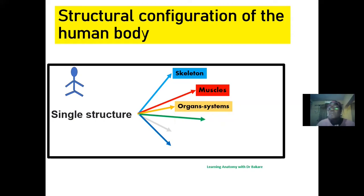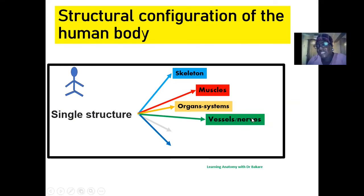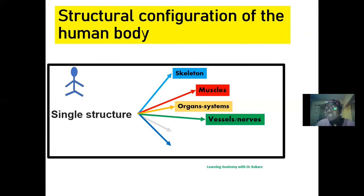We have different organs and systems, such as the GI tract, the urinary system, the cardiovascular system, and so on. The vessels basically provide oxygen and nutrients to the cells that make up the organs and systems, so they can carry out their metabolic activities within the tissues. We also have the lymphatic system, which is involved in the drainage of fluid within the tissues, and nerves, which are involved in the sensation of the body.